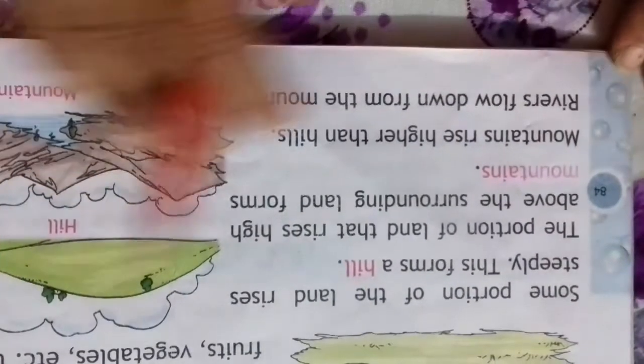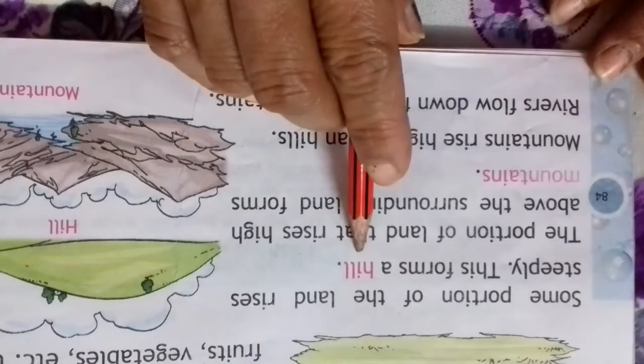Some portions of land rise steeply. This forms a hill.